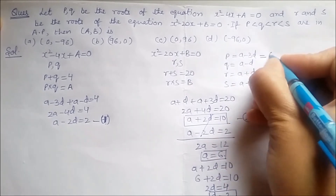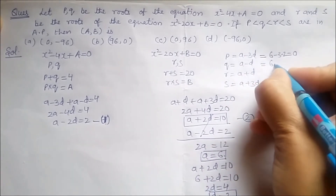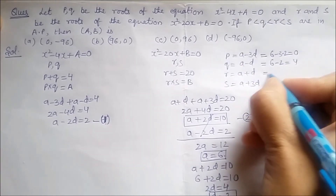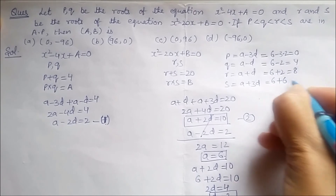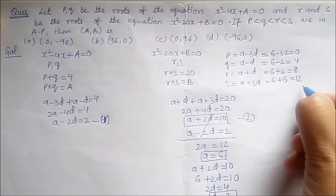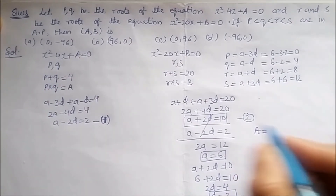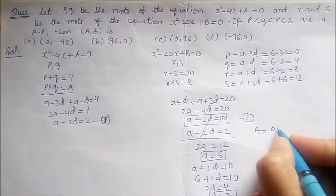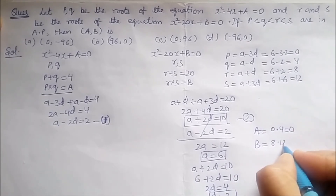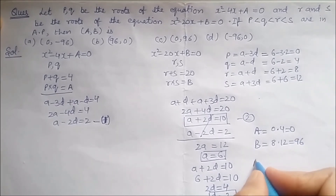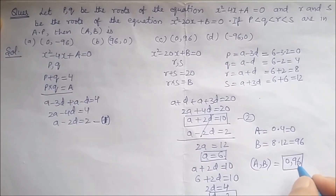Substituting A = 6 and d = 2: p = 6 - 6 = 0, q = 6 - 2 = 4, r = 6 + 2 = 8, s = 6 + 6 = 12. Therefore a = p·q = 0 × 4 = 0, and b = r·s = 8 × 12 = 96. So (a, b) = (0, 96), which matches option C — the correct answer.